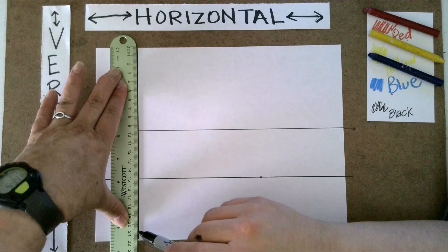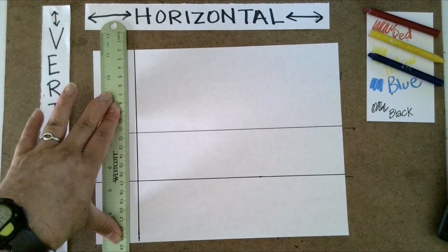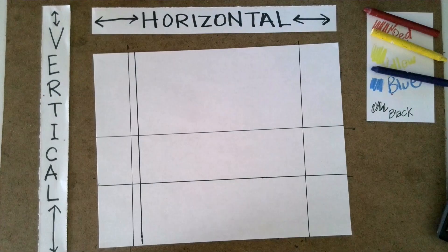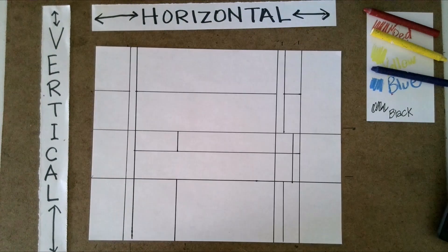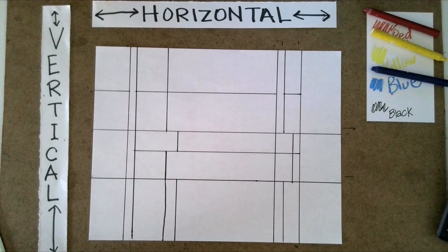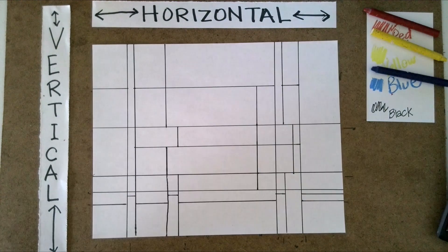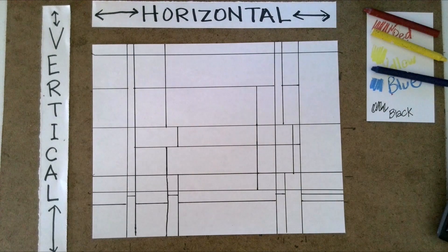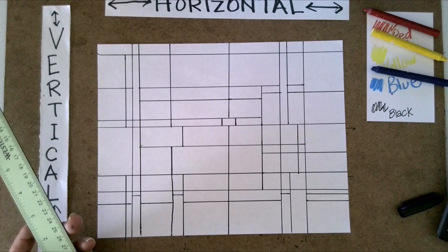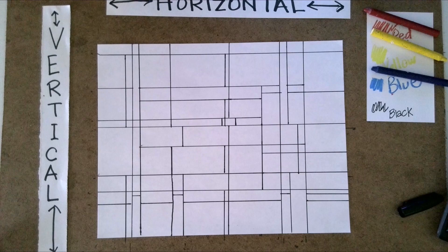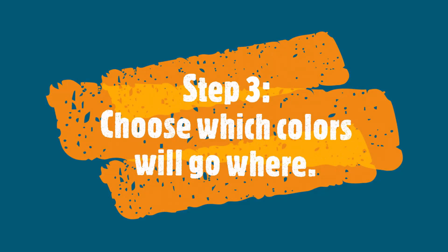Of course we also need to add vertical lines — remember, vertical lines go up and down. You can draw as many lines as you would like and start or stop them wherever you want, as long as vertical lines never touch other vertical lines, and horizontal lines never touch other horizontal lines.